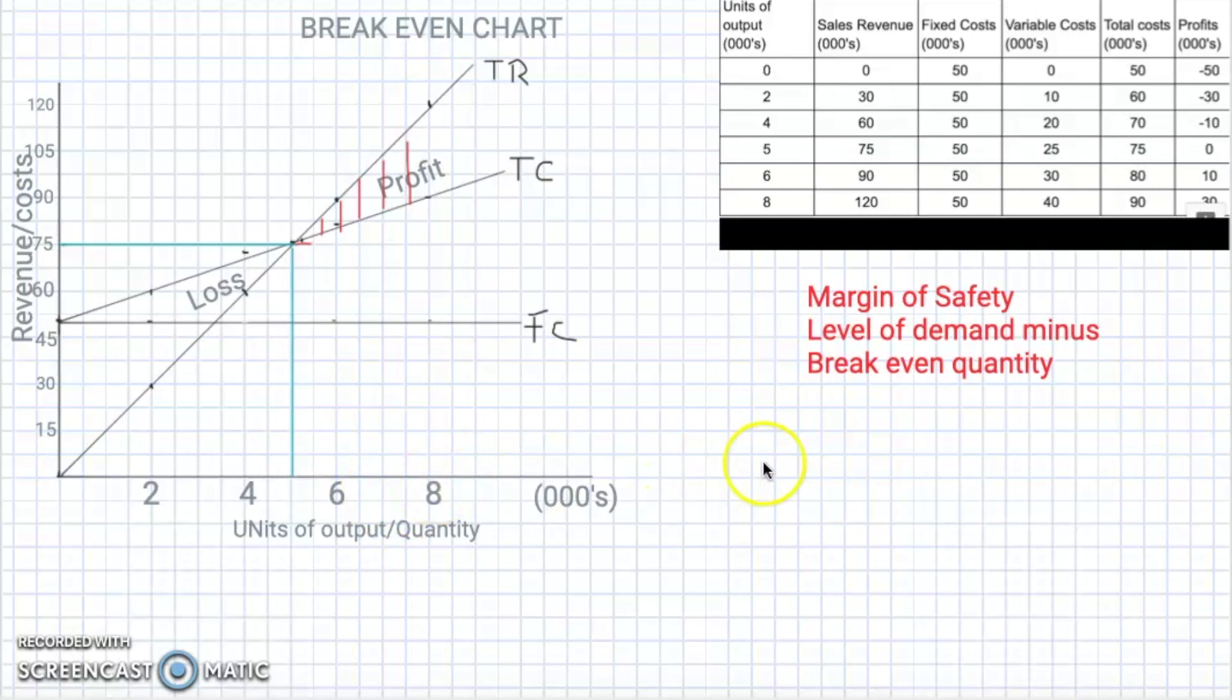So if we were to do this, it would really be a simple thing as just making a subtraction. We know that the demand is eight thousand, so it's really eight thousand less five thousand. Right here, now we know that the margin of safety is actually three thousand units.